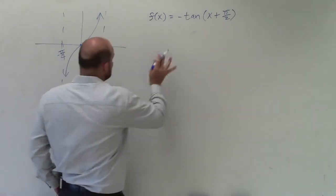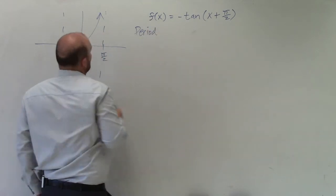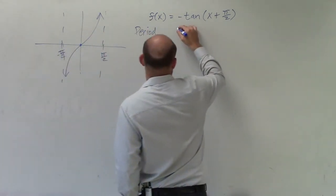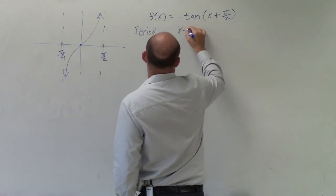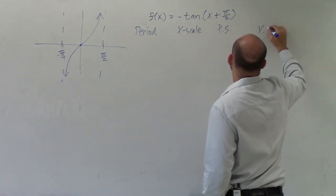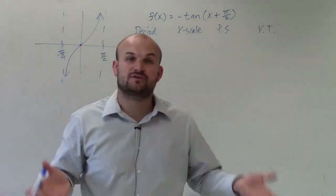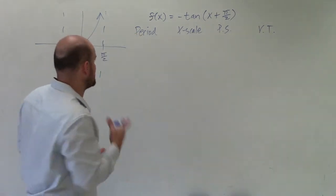Well, to do that, let's go ahead and take a look at what is the information of the period, the x scale, the phase shift, and the vertical transformation. So I like to do this for all graphs for tangent and cotangent.